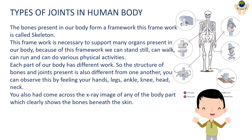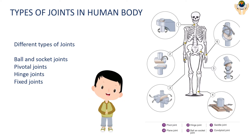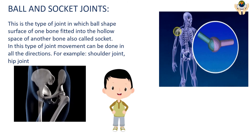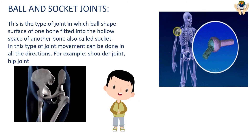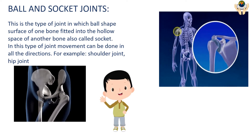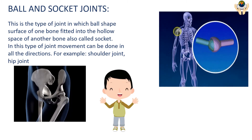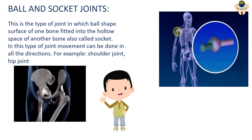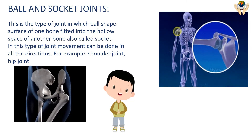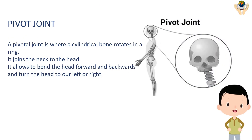Different types of joints — ball and socket joint: this is the type of joint in which the ball-shaped surface of one bone fits into the hollow space, called a socket, of another bone. In this type of joint, movement can be done in all directions. Examples include shoulder joints and hip joints.